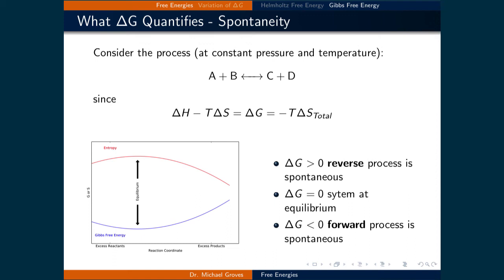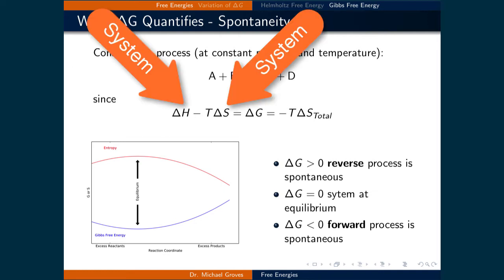What about the Gibbs free energy? It can also be used to determine if a process is spontaneous. Consider again a process A plus B that is in equilibrium with C plus D. We can calculate the change in enthalpy and entropy of a process at a given temperature to find the change in Gibbs free energy. This will tell us the change in the total entropy of the process times the negative temperature. Similar to the Helmholtz free energy, this is very useful because the terms used to find delta G are all based on the system.